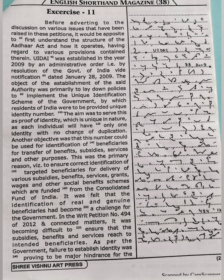UIDAI was established in the year 2009 by an administrative order, that is by resolution of the Government of India, vide notification dated January 28, 2009. Stop. The object of the establishment of the said authority was primarily to lay down policies to implement the Unique Identification Scheme of the government.